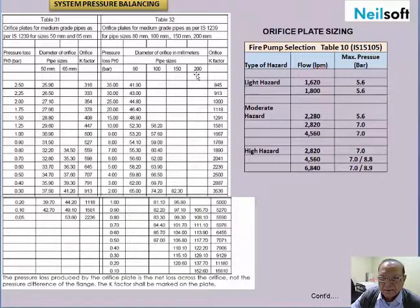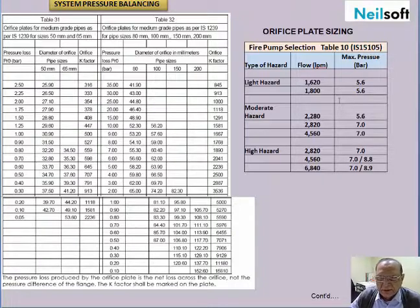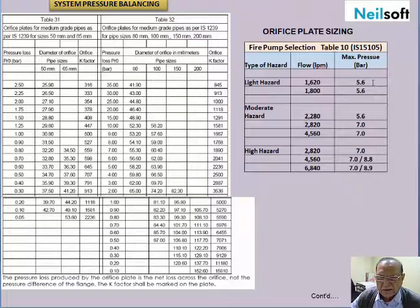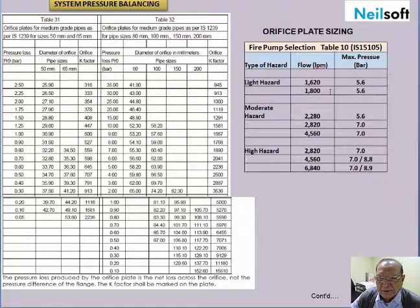When calculating the orifice plate, these two criteria will be followed. For light hazard, it should allow a flow of 16 to 20 liters per minute — that is the outlet flow. The outlet pressure should be sized to 5.6 bar. These are the two conditions when the flow is 16 to 20 liters per minute, which is the pump flow used for light hazard applications.